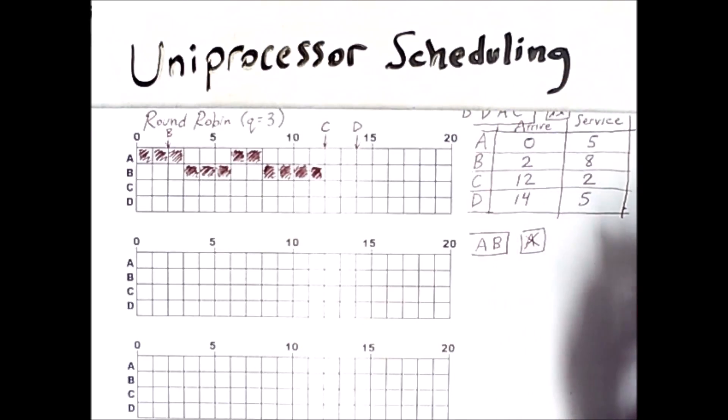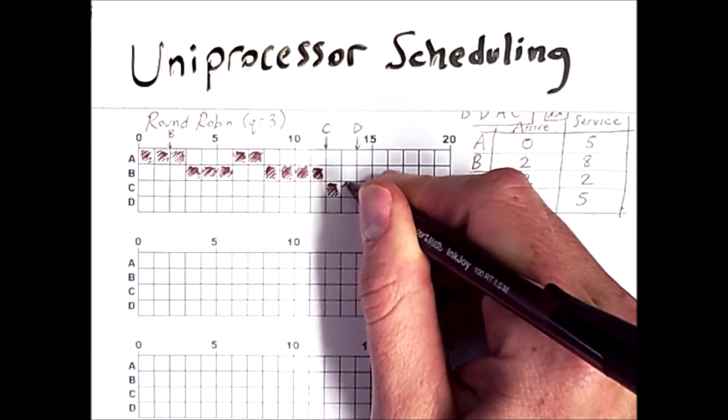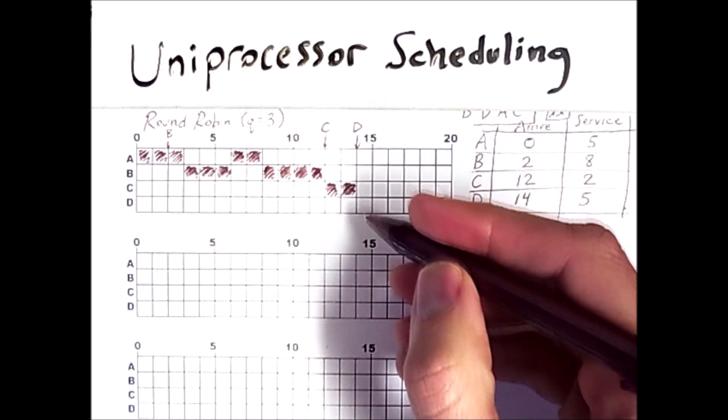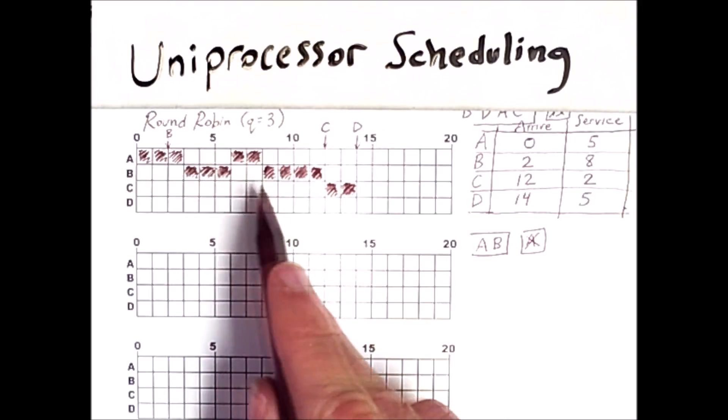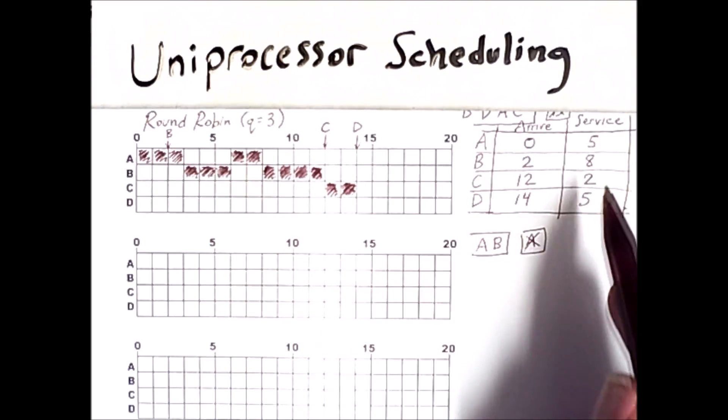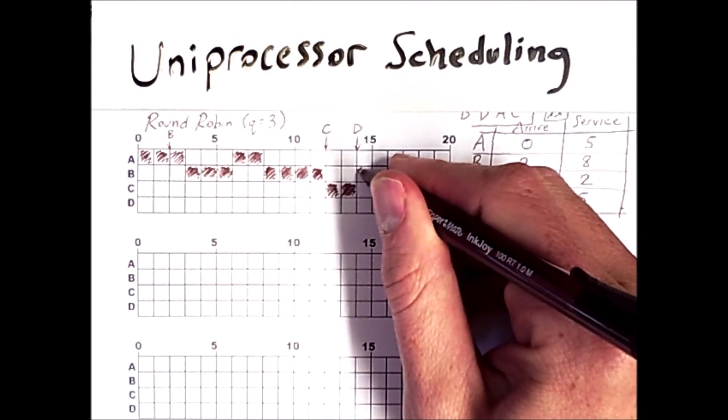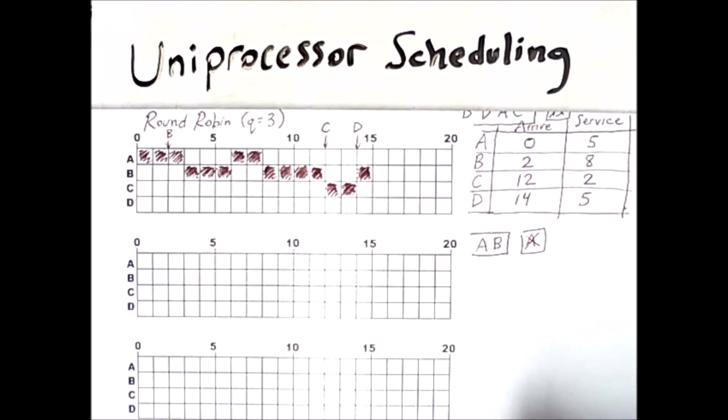And so C will get to go for its up to three units. Now C's service time happens to only be two. So C will only run for two units here. And then D is arriving right when C is finishing. But B was still in line and was not finished yet. Because B has only completed one, two, three, four, five, six, seven of its eight units. And so B was waiting in line. So B immediately comes back in, finishes its last unit. And then D will get to execute.